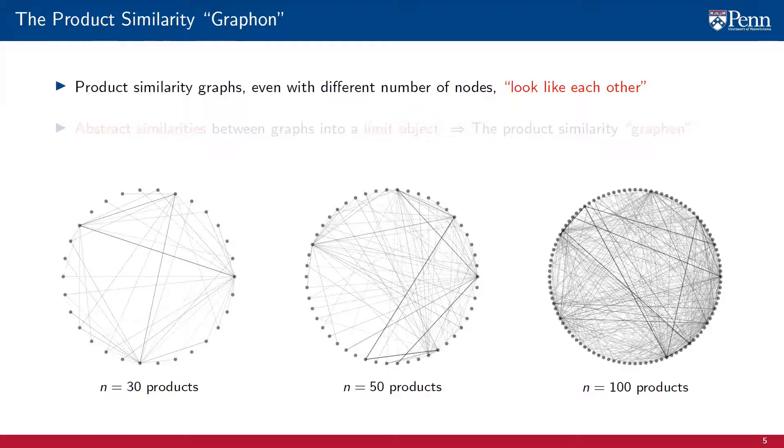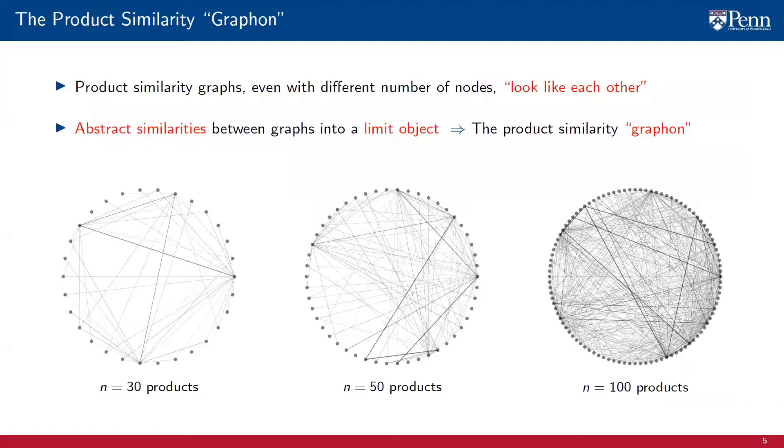In terms of the practical value of graphons, recall our encounters with product similarity graphs. As we look at these graphs for different collections of products, we see that these graphs look like each other. This is true even if the number of products we are considering are different. We can therefore abstract these similarities into a limit object. This limit object is what we would call the product similarity graphon. The reason for creating a limit abstraction is that similarities are more apparent for larger graphs. We can think of product similarity graphs as elements of a sequence converging to a product similarity graphon that encloses this shared structure.